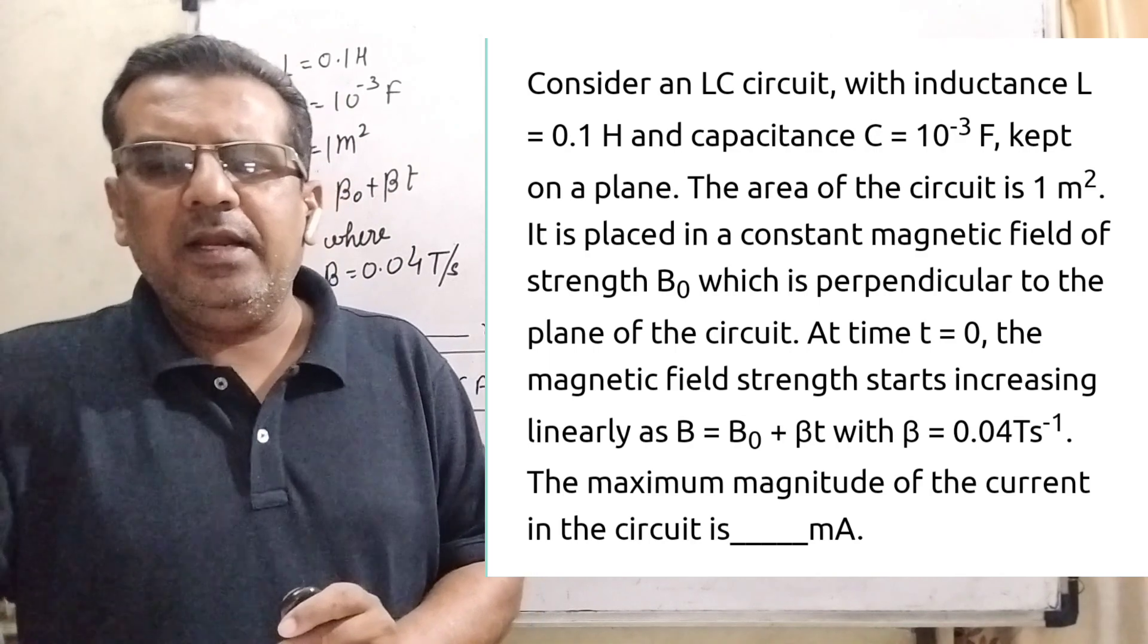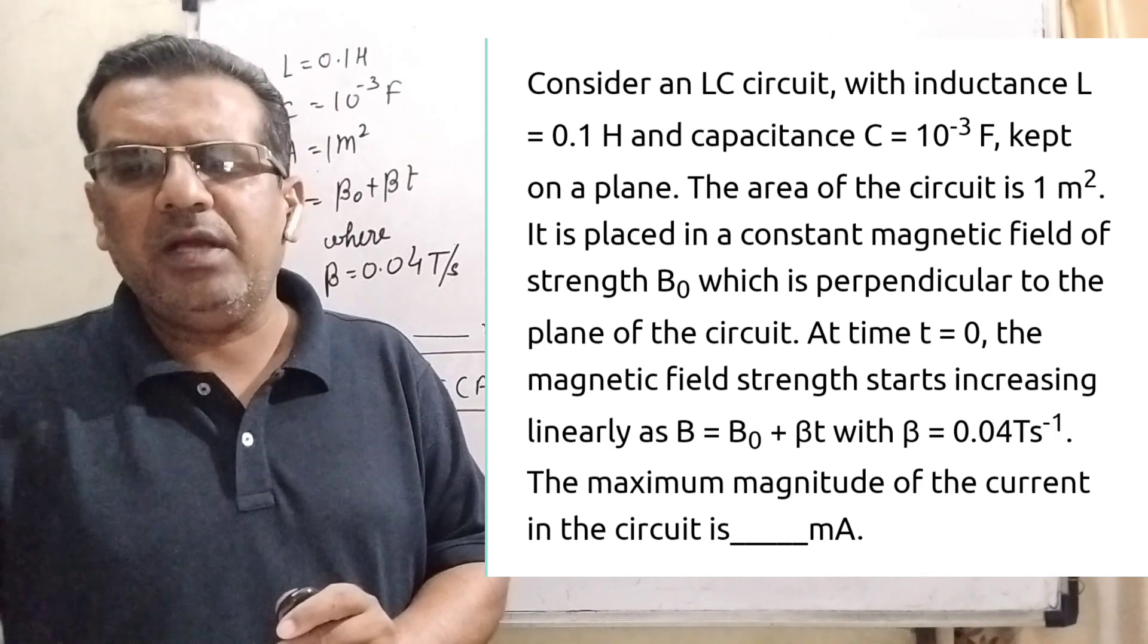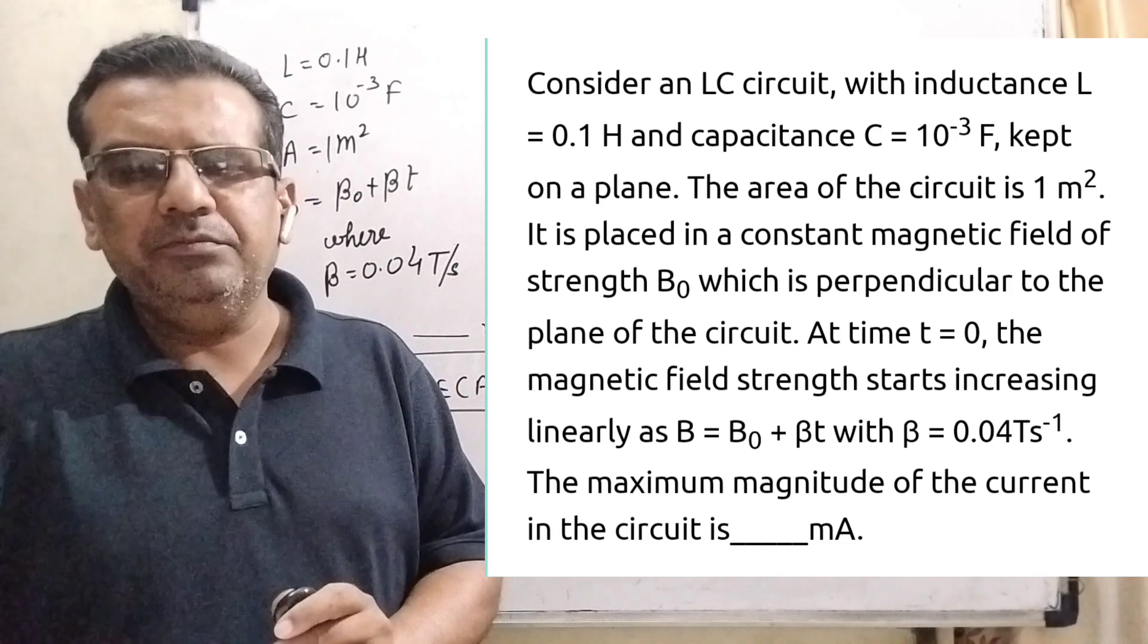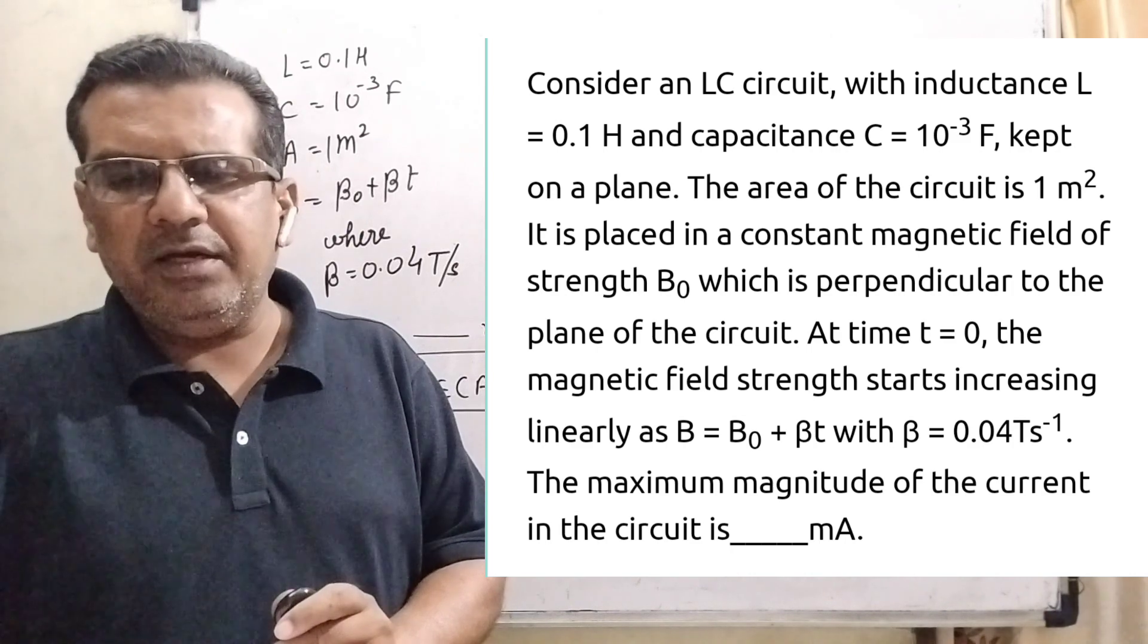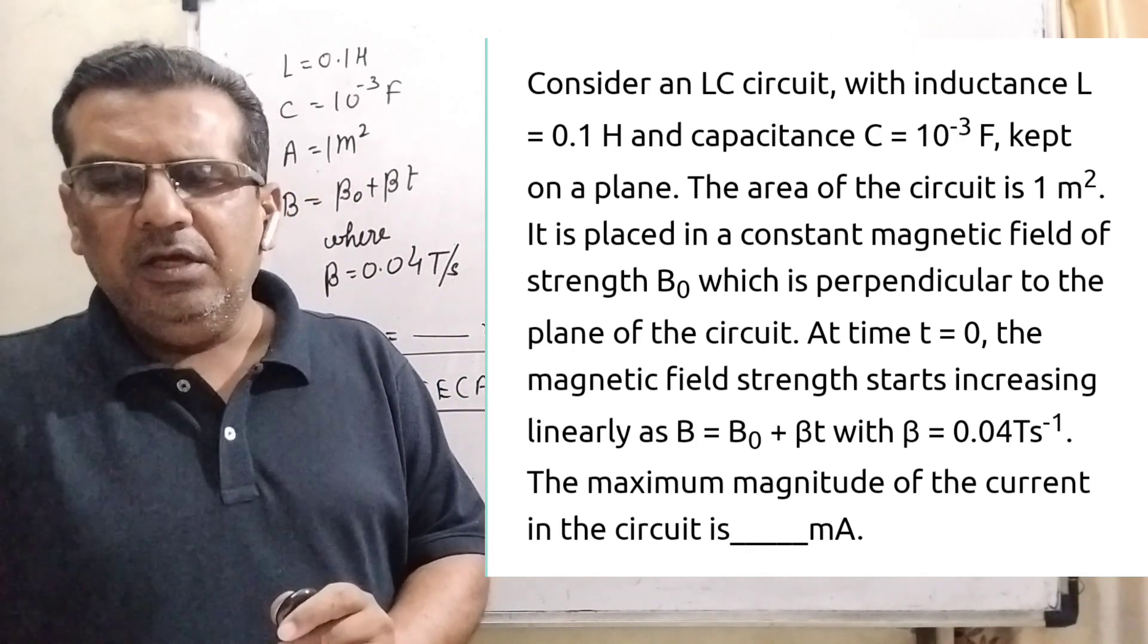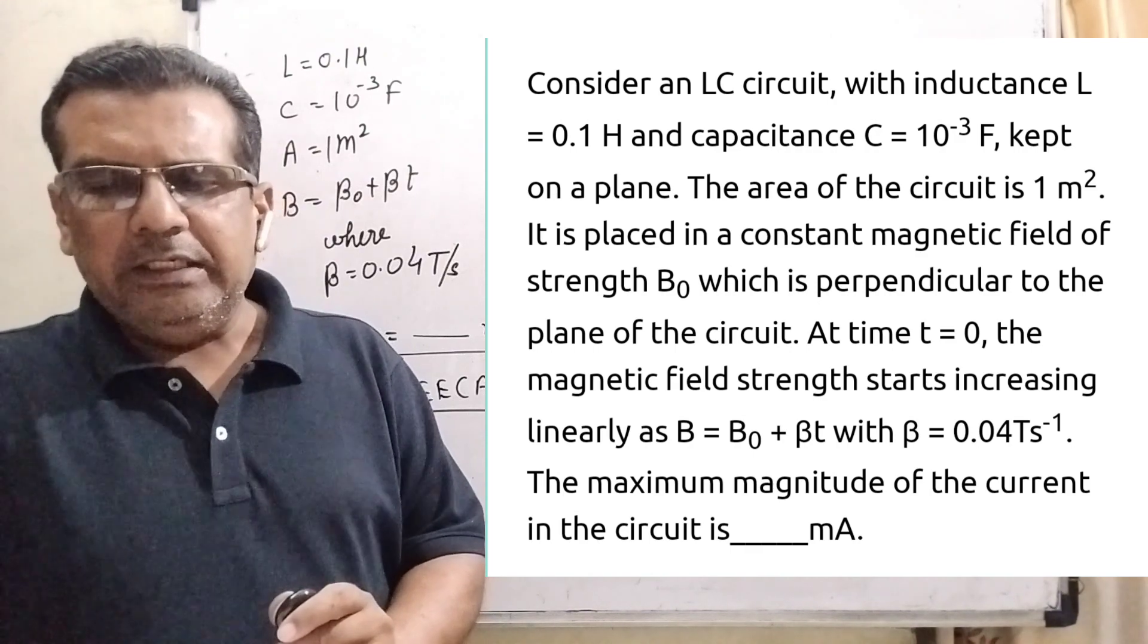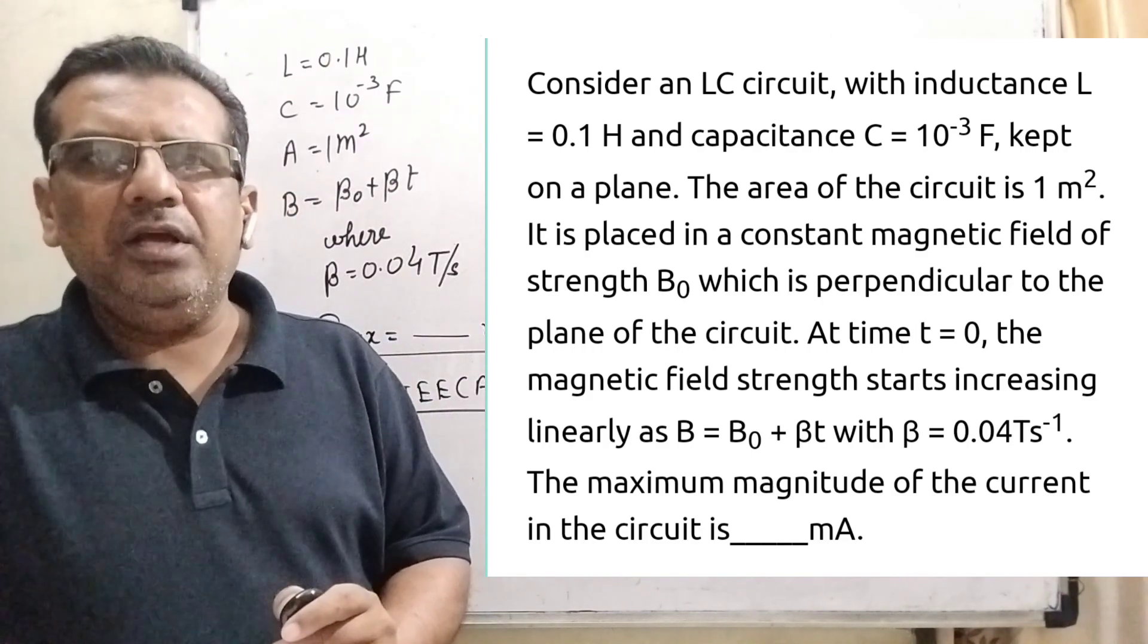Here is the question. Consider an LC circuit with inductance L equal to 0.1 Henry and capacitance C equal to 10 raised to the power minus 3 Farad, kept on a plane. The area of the circuit is 1 meter square. It is placed in a constant magnetic field of strength B0 which is perpendicular to the plane of the circuit. At time t equal to 0, the magnetic field strength starts increasing linearly. Here magnetic field B equal to B0 plus beta t, with beta equal to 0.04 Tesla per second. The maximum magnitude of the current in the circuit is in milliampere. This question is asked JEE Advanced 2022.